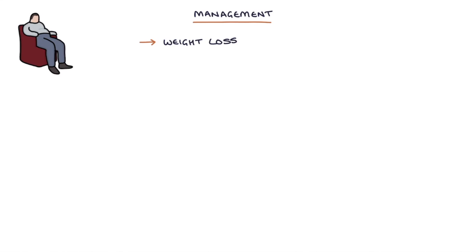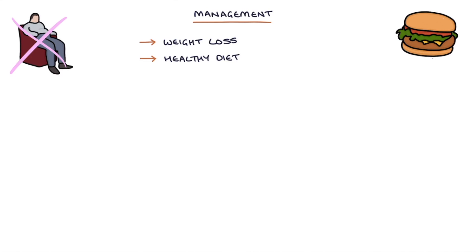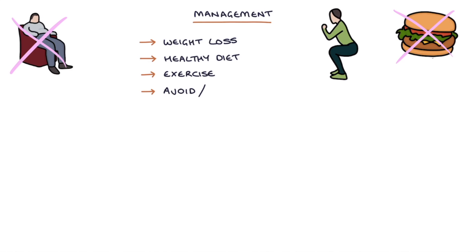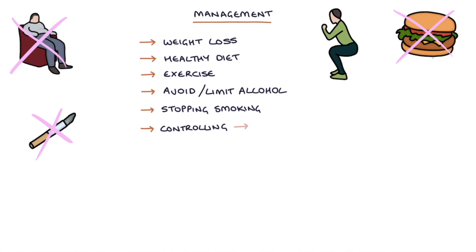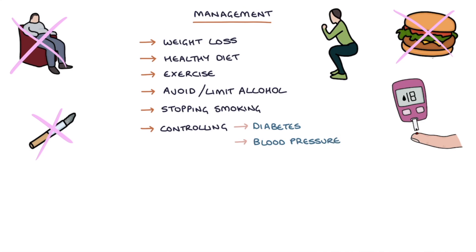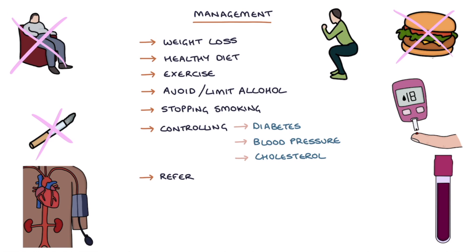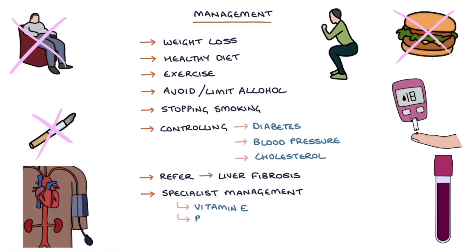Management involves weight loss, a healthy diet — the Mediterranean diet is recommended — exercise, avoiding or limiting alcohol intake, stopping smoking, controlling diabetes, blood pressure, and cholesterol, and referring patients where scoring tests indicate liver fibrosis to a liver specialist. Specialist management could include vitamin E, pioglitazone, bariatric surgery, and potentially liver transplantation.